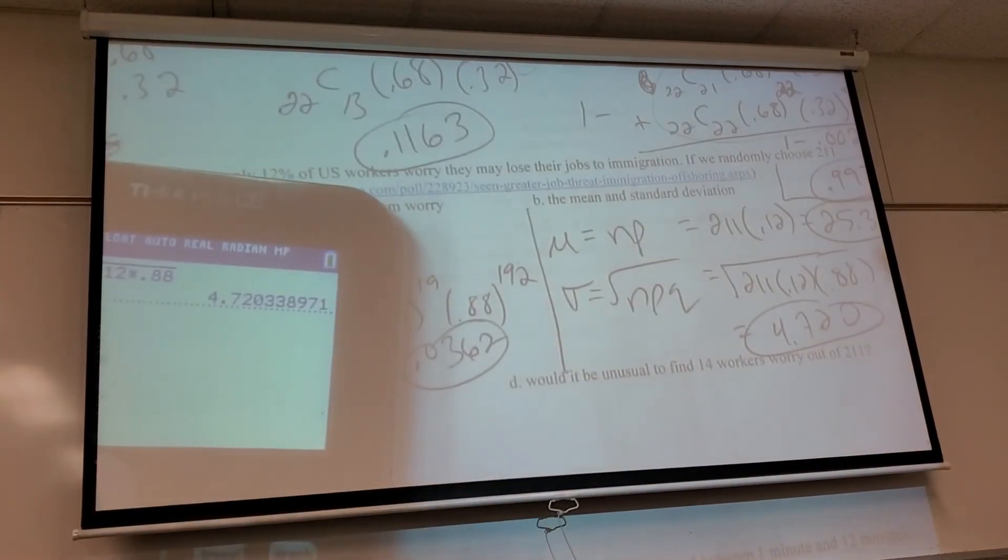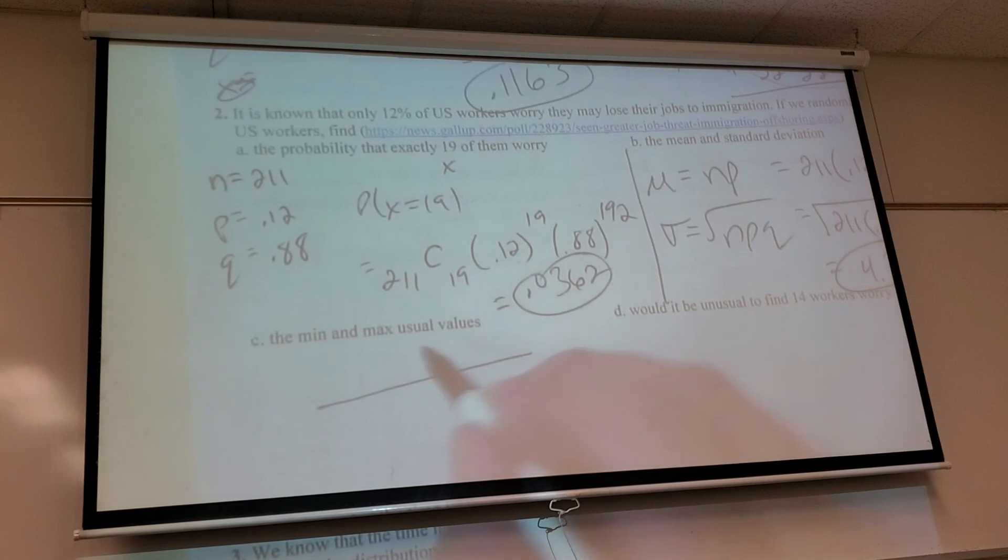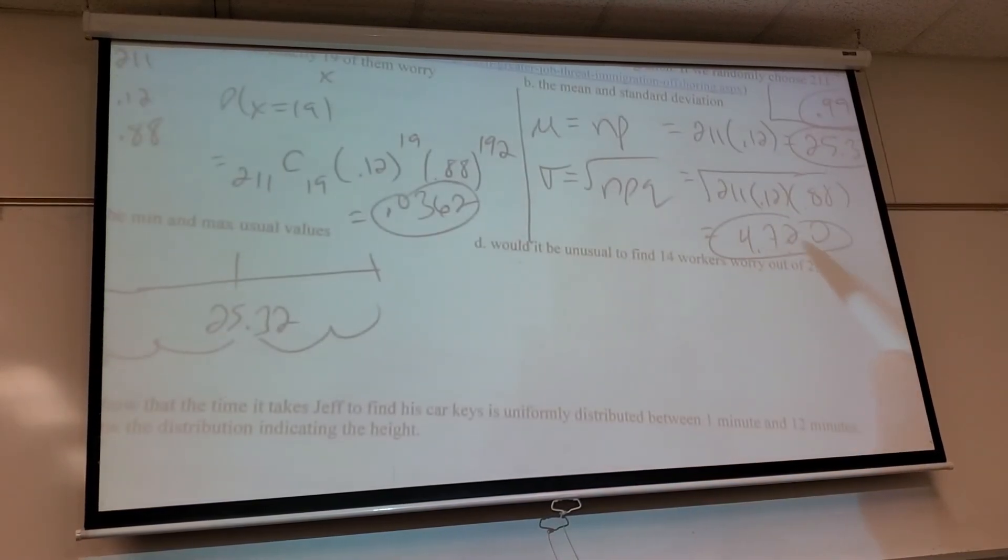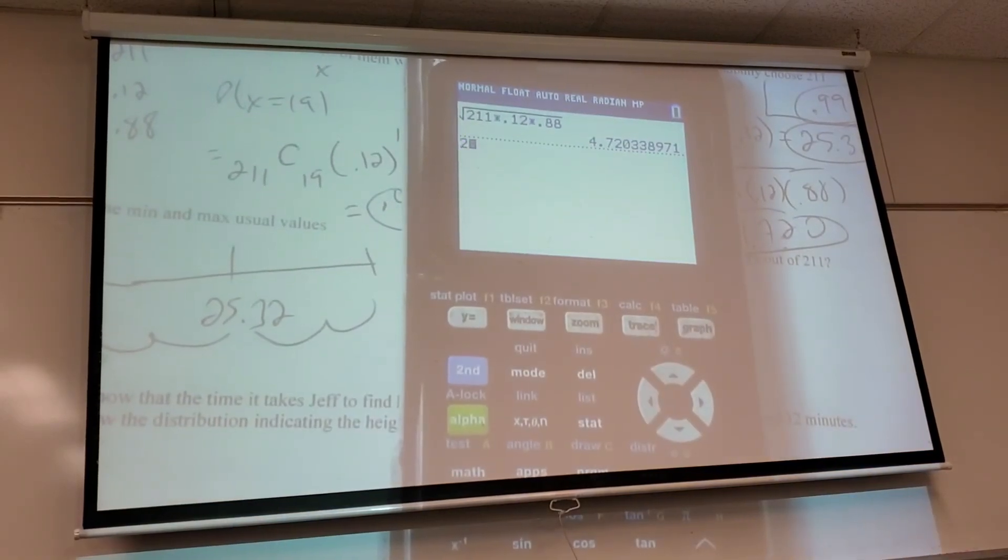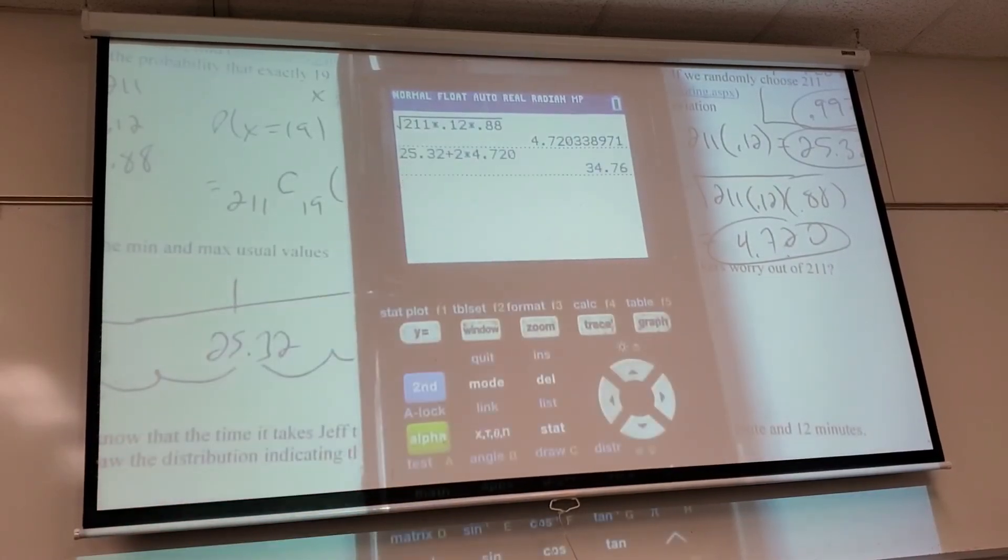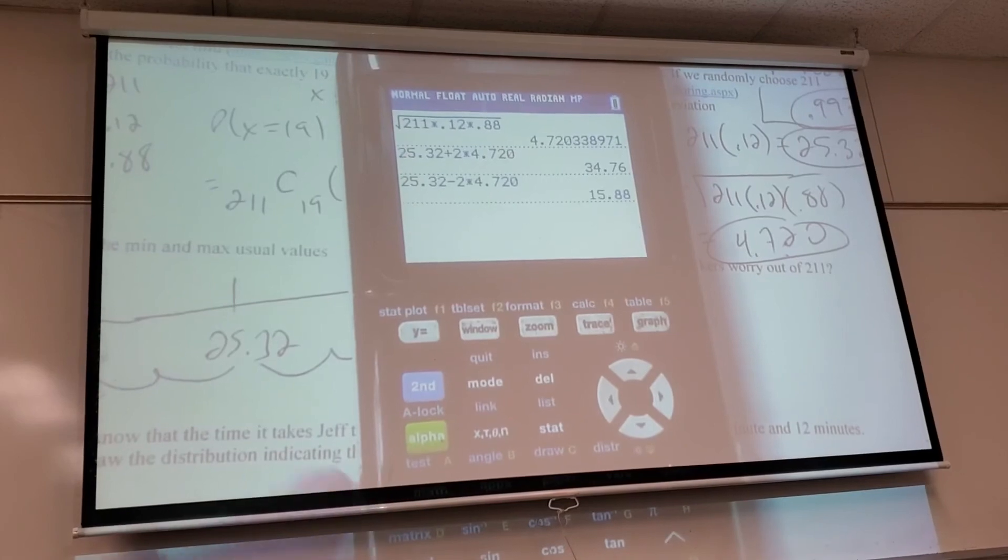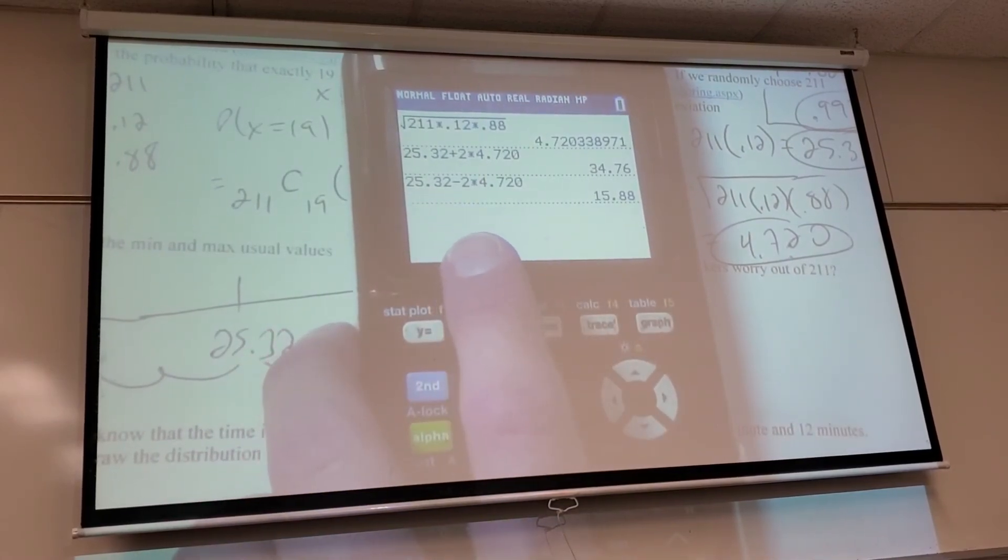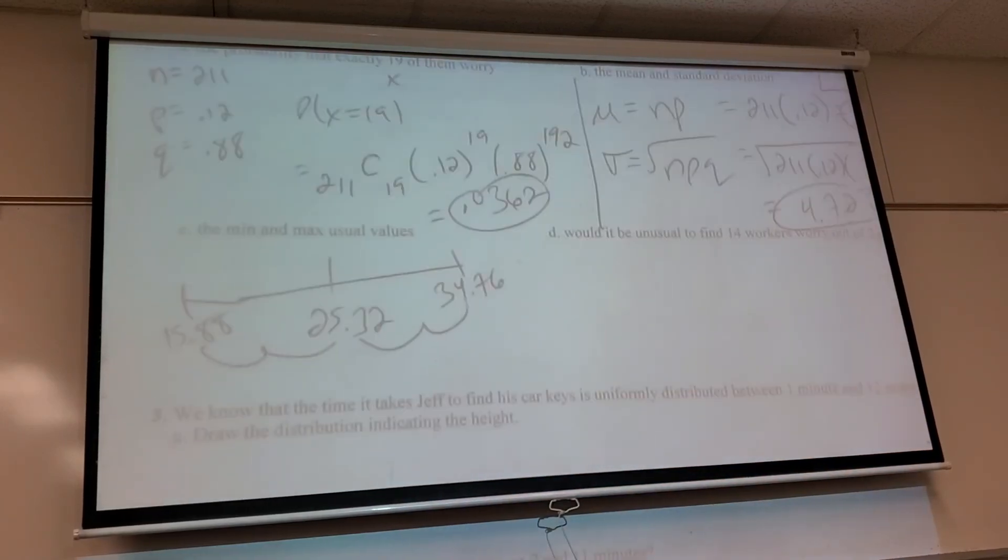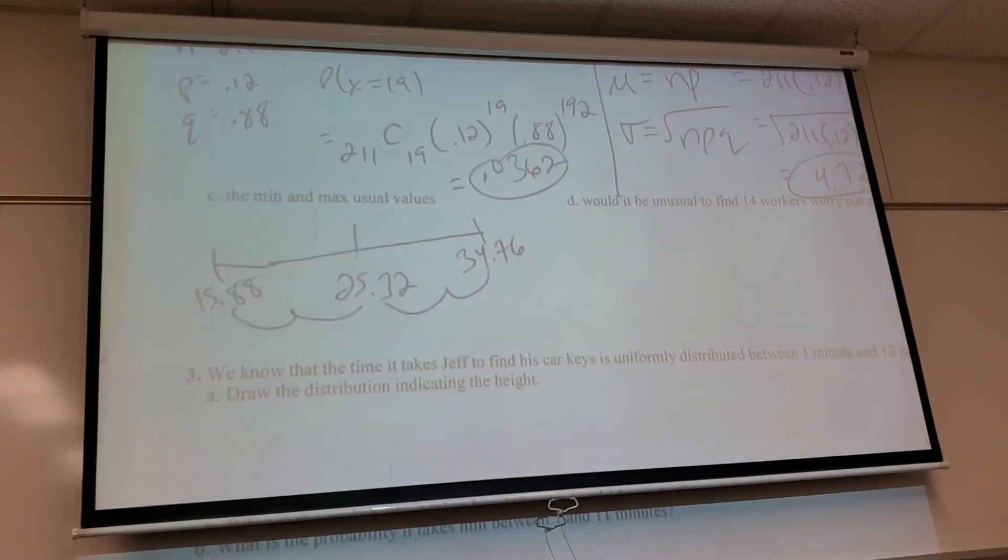So on average 25.32, so now we can see how far away from that is where unusual starts. If I put 25.32 in the middle, go up two steps and down two steps, standard deviations. So I can do exactly this - plus two times these. Start at the mean, go up two of these. And then go down. So it'll be 15.88 up to 34.76.